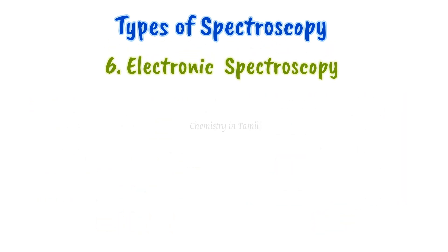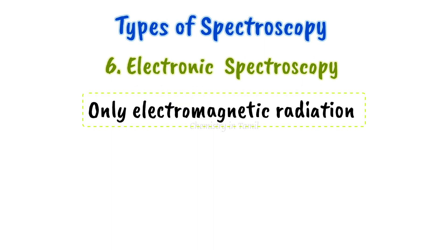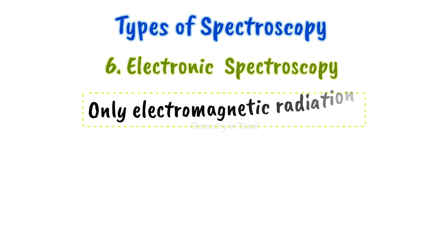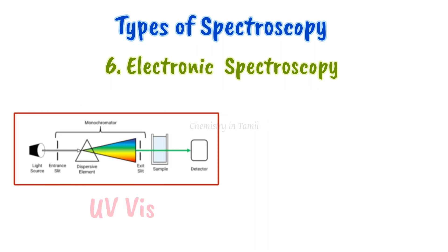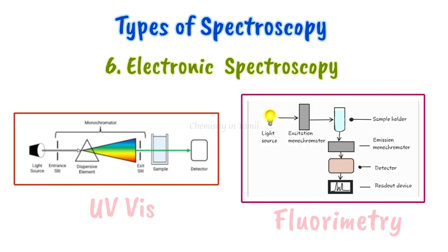Sixth one: electronic spectroscopy. Here, electromagnetic radiation interacts with an electronic field. Examples include visible spectroscopy, UV, and fluorimetry. You will see how electromagnetic radiation behaves in relation to the magnetic and electronic field components in these types.